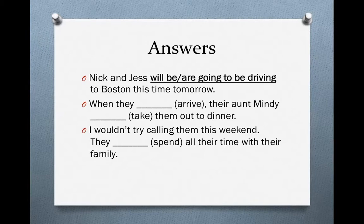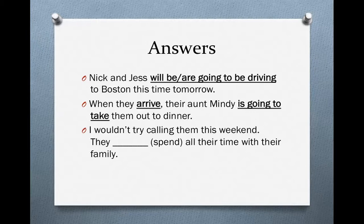For the next sentence: when they arrive, their Aunt Mindy is going to take them out to dinner. Why? First of all, when they arrive — that's a time clause, and remember with time clauses we use simple present, so we want to use arrive. In the main clause, their Aunt Mindy is going to take them out to dinner — simple future. Why? Because we don't have a specific time here. This is a plan made in advance, so we use going to and not will. But it's not at a specific time, so there's no reason to use the Future Progressive.